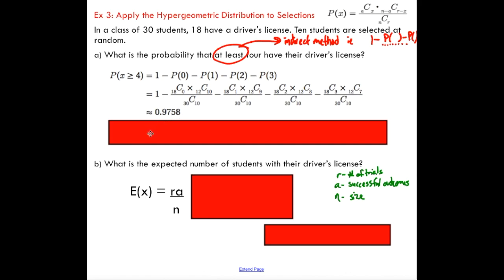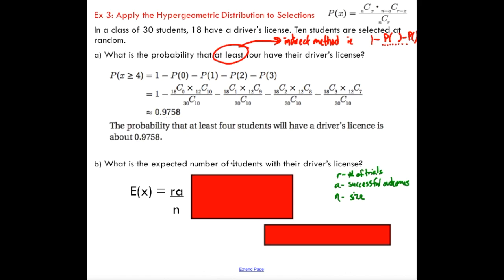With probability, we like to write it as a decimal or a percentage. Now, if we want to know the expected number of students with their driver's licenses, we can use this formula. We could also add up all of our X times P(X)s, but that's going to take us a long time, so I'd suggest using this formula.